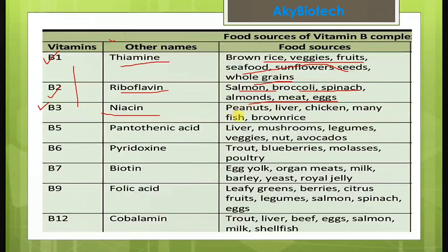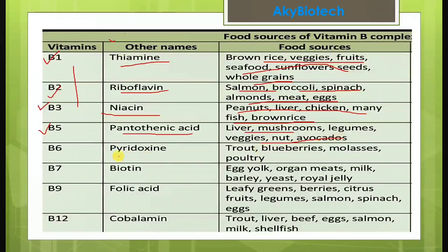B3 — niacin — is found in peanuts, liver, chicken, oily fish, and brown rice. B5 — pantothenic acid — is found in liver, mushrooms, legumes, vegetables, nuts, and avocados. B6 — pyridoxine — food sources include trout, blueberries, molasses, and poultry.